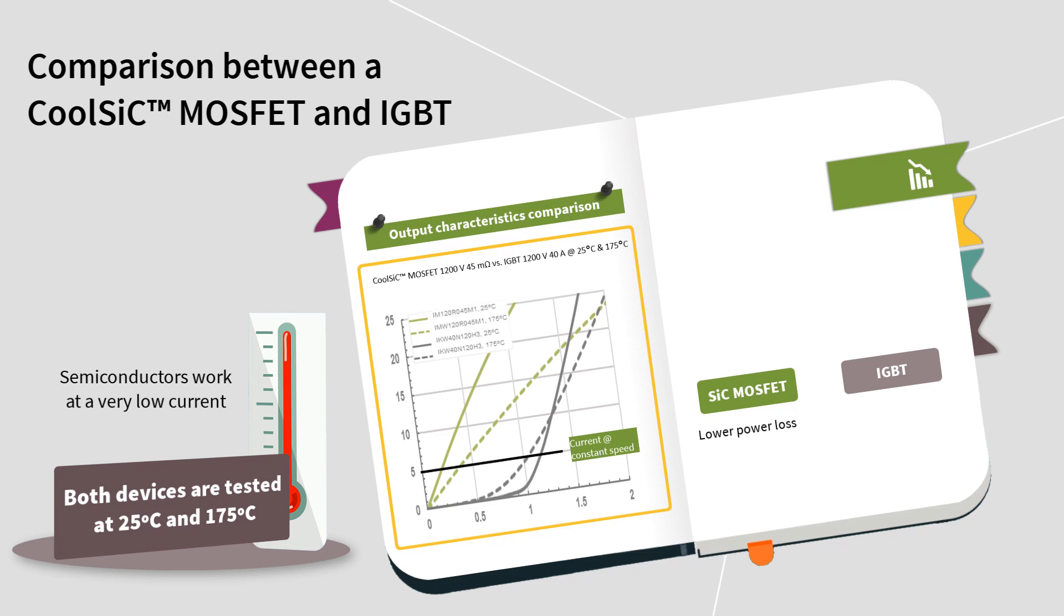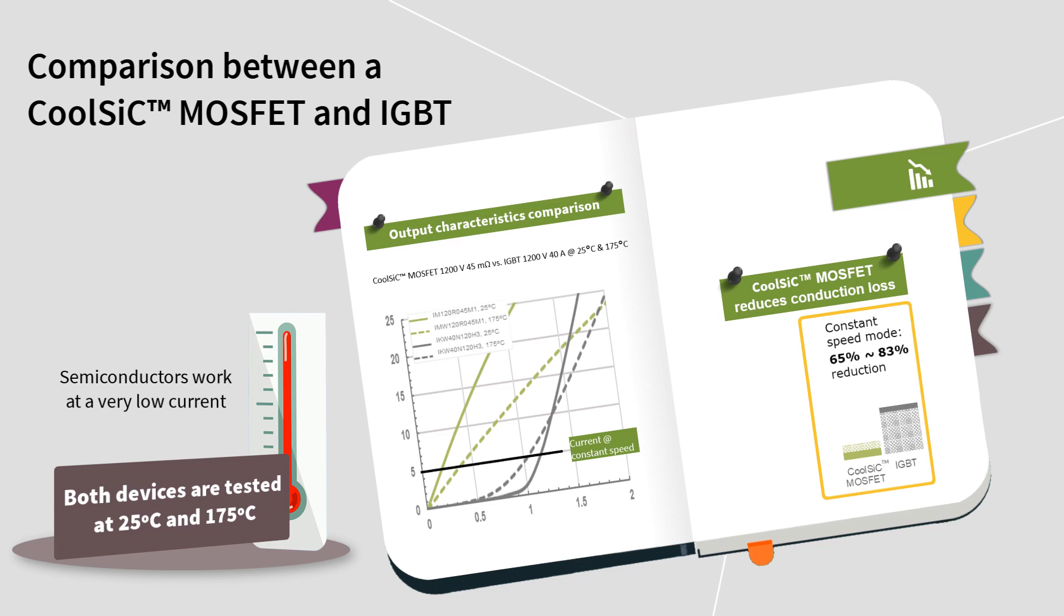This happens because SiC MOSFETs have a resistance behaviour in which low current results in low voltage. In the case of IGBTs, due to the knee voltage, the voltage across the device will be over 4 times higher than in a CoolSIC MOSFET. Finally, here you can see that, in a constant speed mode, CoolSIC MOSFET reduces conduction losses up to 83%.